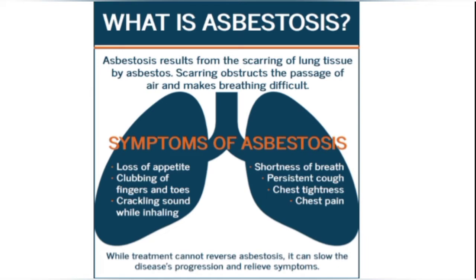For diagnosis, in case of early asbestosis you need to do a CT scan. In case of advanced asbestosis, a chest X-ray may be enough. The chest X-ray appears as excessive whiteness in the lungs and a honeycomb appearance.